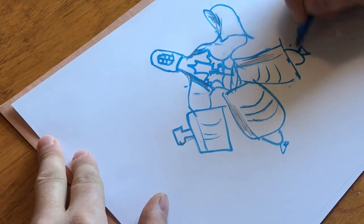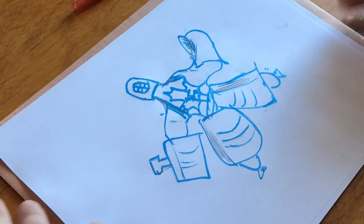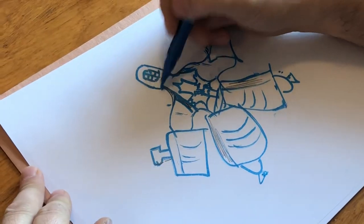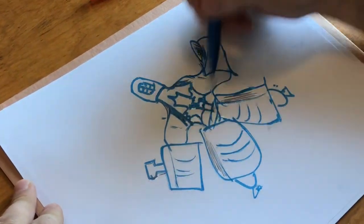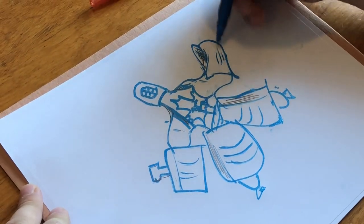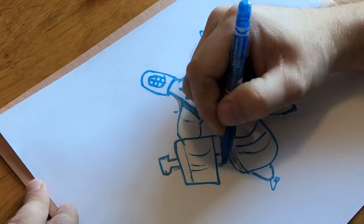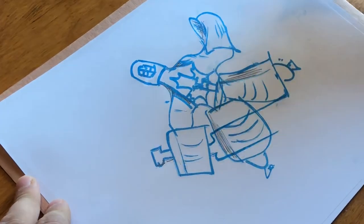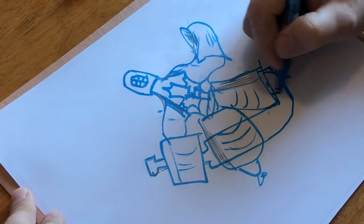And some skate blades. This is a goaltender step-by-step drawing again. It's curves on either side, arm, arm, shoulder, arm, glove, hand, blocker, hand. The stick is going out and over and then coming around.